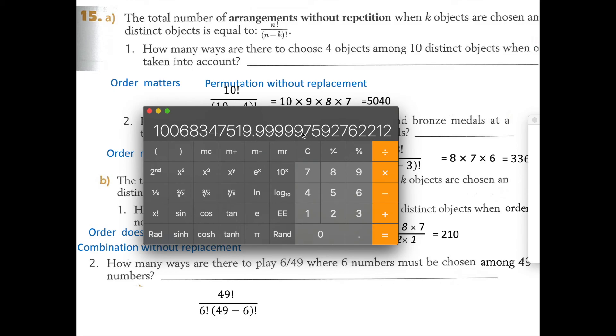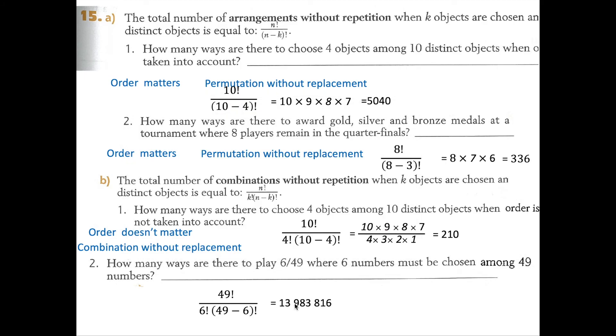And divided by 6 factorial is equal to 13,983,816. So that means your probability of winning the 649 if you buy a ticket is 1 out of 13,983,816. And that's it for question number 15. Have a good day.